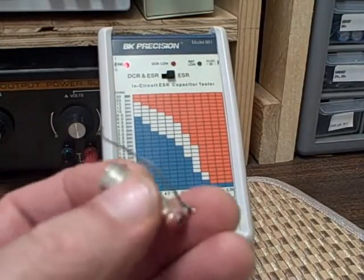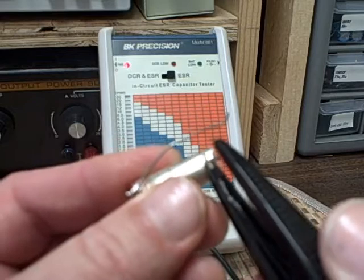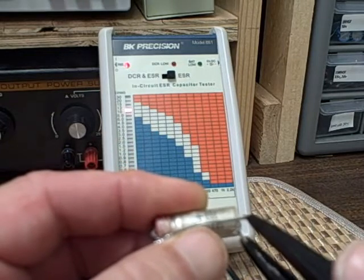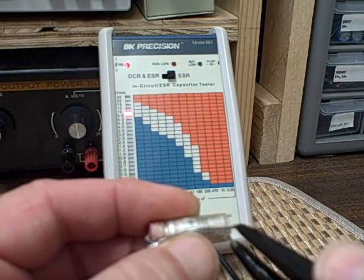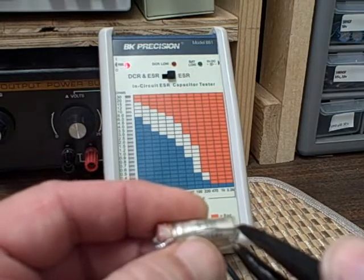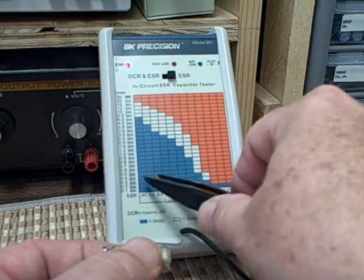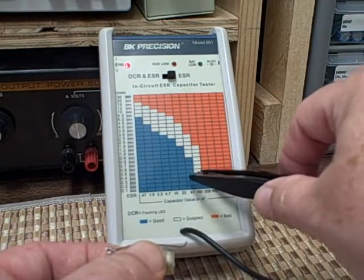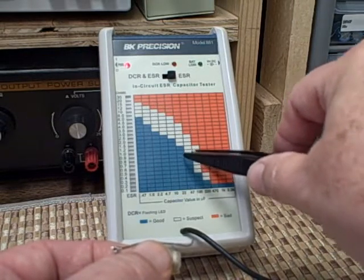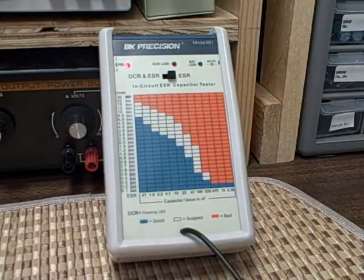Here we have a hundred microfarad 25 volt capacitor came out of the Wave Tech and we're gonna try and catch both leads here. I'm reading about 10 ohms, maybe 12. A hundred microfarad capacitor would put us right down in here and we should be reading no more than about 0.4 ohms, but we're up around 12, we're definitely bad. So that one's out.